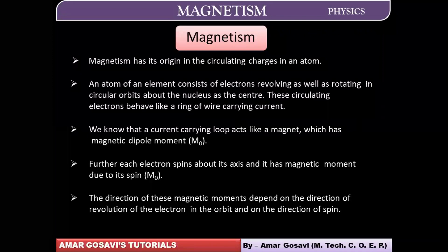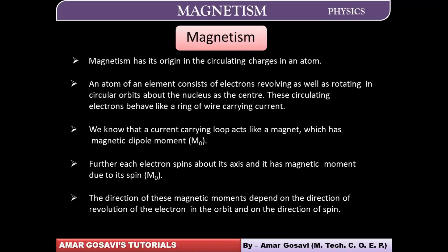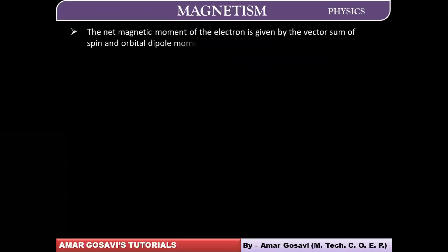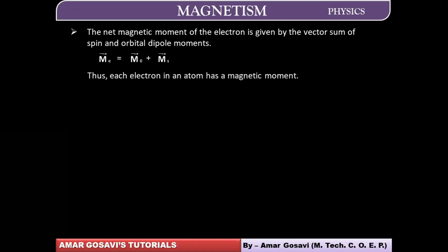Together, we can frame an equation where the resultant magnetic dipole moment comprises the magnetic moment due to orbital motion and magnetic moment due to spin motion. The net magnetic moment will be the vector sum of the dipole moments because of these two types of motion — orbital as well as spin.